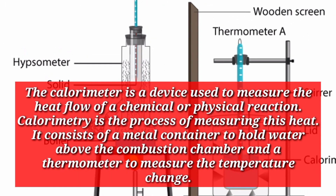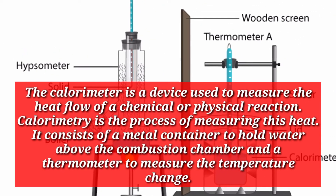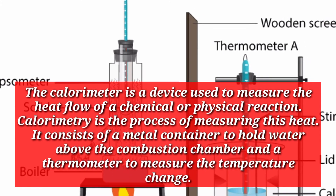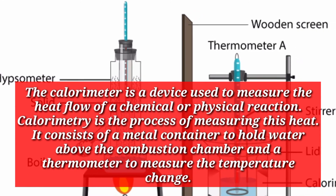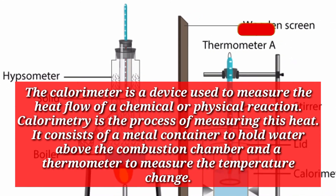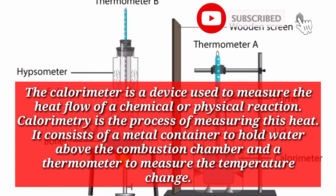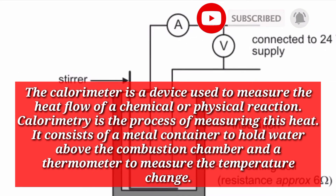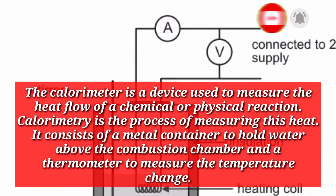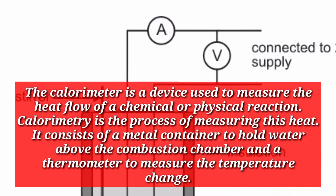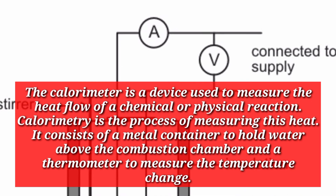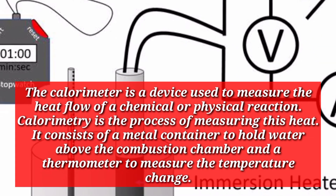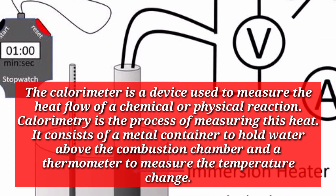The calorimeter is a device used to measure the heat flow of a chemical or physical reaction. Calorimetry is the process of measuring this heat. It consists of a metal container to hold water above the combustion chamber and a thermometer to measure the temperature change.